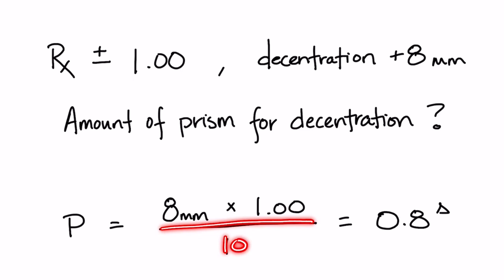So in order to move the OC eight millimeters away from the geometric center, there needs to be 0.8 diopters of prism at the geometric center. Easy, right?